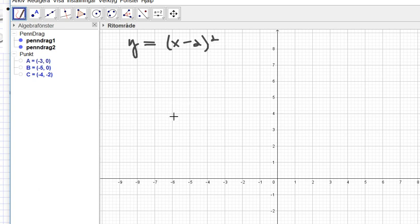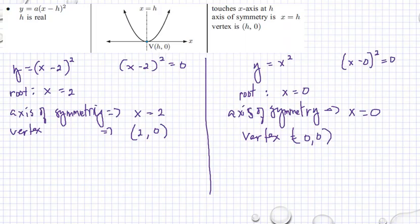I will just write my function here: y equals x minus 2 squared. We know that our root is 2, then we can put a pointer there. That is also our axis of symmetry and that is also our vertex, all at once.